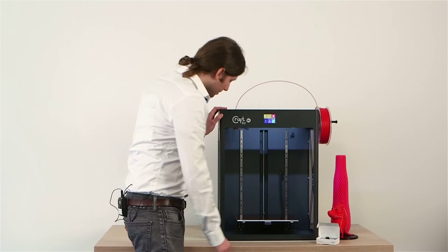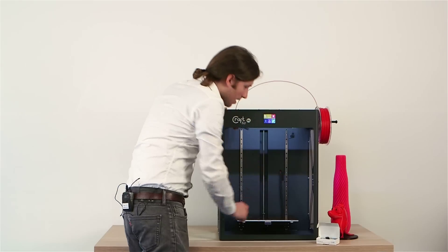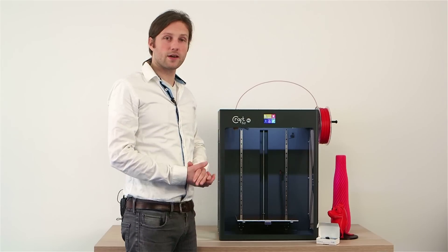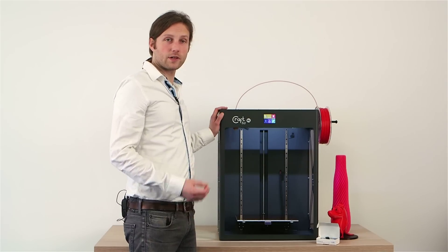Another thing I'd like to point out with the machine are the new linear rails. In our original CraftBot, we had a rod and bearing system, and for the bigger size, with all of our tests, we found that we had more precision and less noise when we used the rail system.